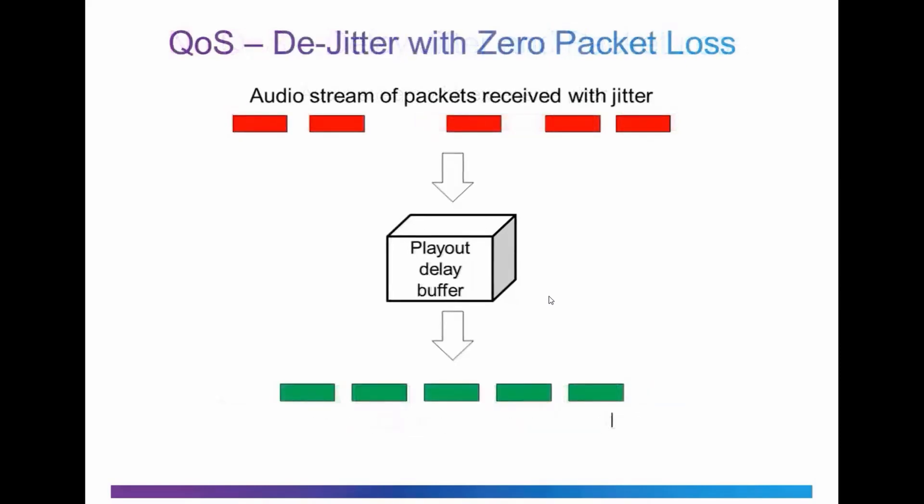With QoS, more voice packets are processed and forwarded because they're in the high priority queue, which has been configured for zero packet loss. You may still have variations in delay and jitter, but an audio stream is able to make up for that. The playout delay buffer can send out a constant stream of audio information, resulting in a call that experiences zero drop-off.